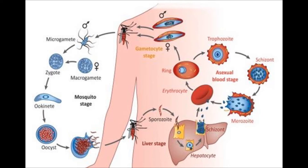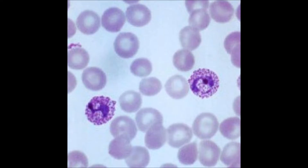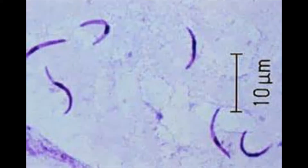Number 2: Plasmodium. The disease caused is malaria. Plasmodium has a life cycle which involves two hosts: an infected female Anopheles mosquito and a human host. It enters the human body in the sporozoite stage by the bite of the female Anopheles mosquito.